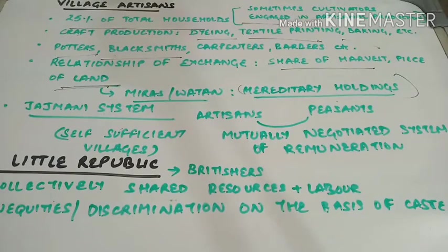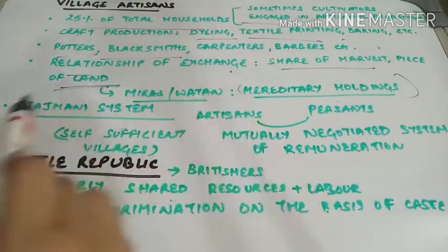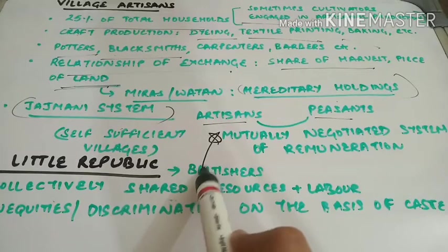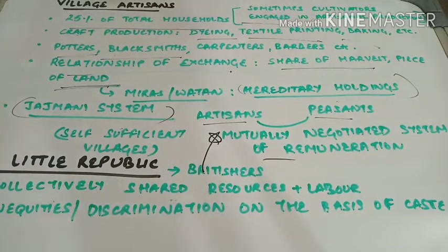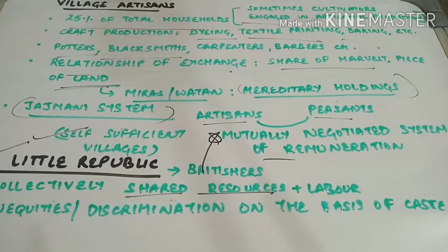When we discuss this relationship of exchange, we have to talk about the jajmani system. The artisans and peasants entered into a mutually negotiated system of remuneration — they agreed upon what kind of payment they would get in exchange for their services or goods. Many times payment was made in cash, but mostly it was in kind. Because of this relationship of exchange, villages became kind of self-sufficient. According to the British, the village community was like a little republic — people living collectively, sharing resources and labor in an egalitarian society. However, this was far from reality, as the Panchayat was oligarchic and there was discrimination on the basis of caste and gender.